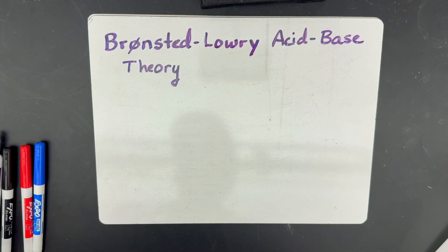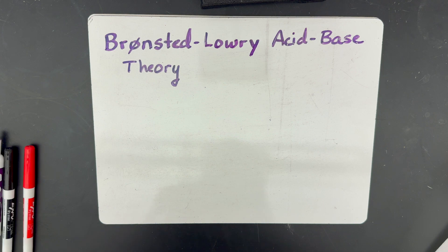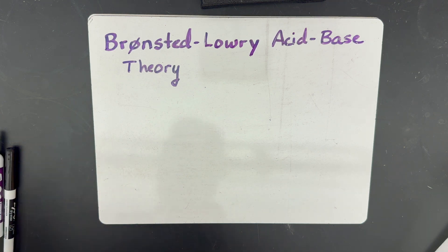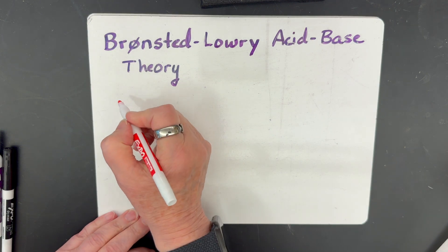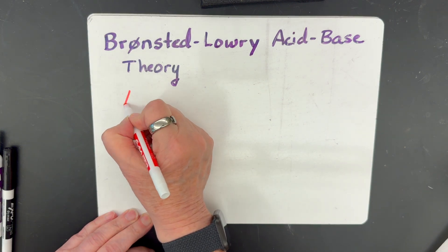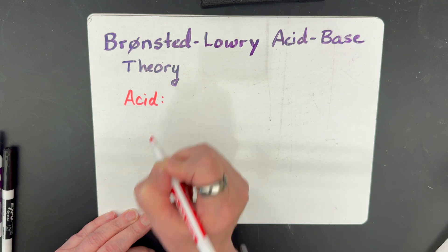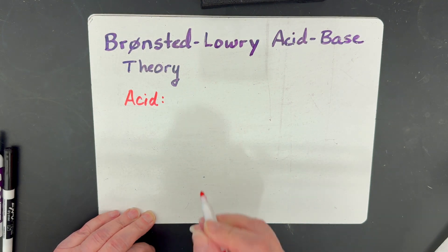Although worded differently, the acid definition is pretty much the same as it was with the Arrhenius theory. For the Brønsted-Lowry theory, an acid is defined as anything that releases protons in a solution.